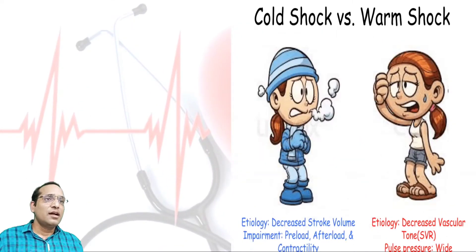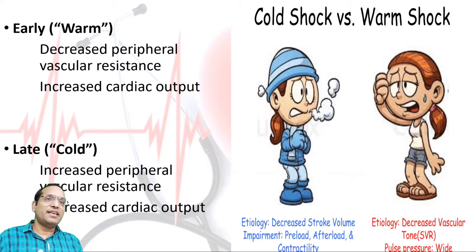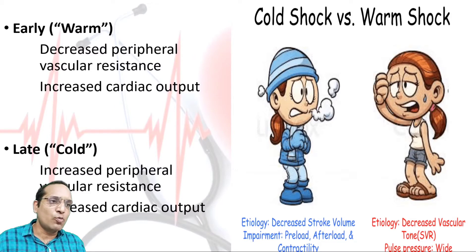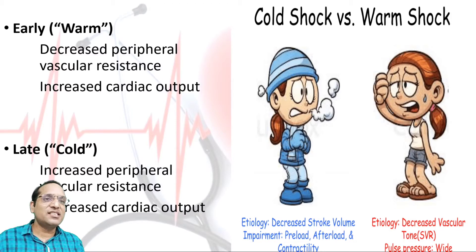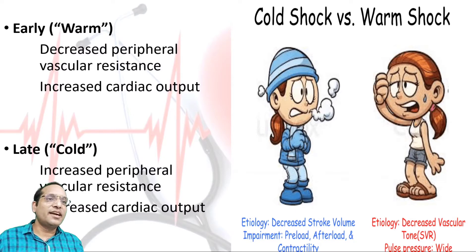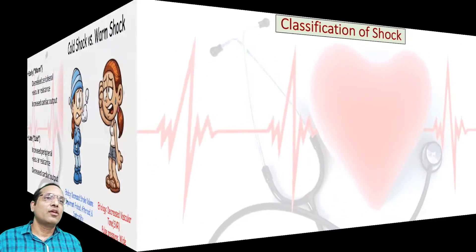We should differentiate cold shock from warm shock. In the early stage, there is warm shock where peripheral vascular resistance is decreased, leading to increased cardiac output and wide pulse pressure. In the latter stage, there may be cold shock where peripheral vascular resistance is increased along with decreased stroke volume or decreased cardiac output, with impairment of preload, afterload, or cardiac contractility.